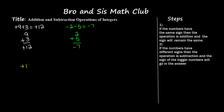Now let's do another problem: positive 11 and negative 7. Looking at step number two, if the numbers have different signs — and positive 11 and negative 7 do have different signs — then the operation is subtraction, and the sign of the bigger number will go in the answer. So I subtract: 11 minus 7 is 4. The bigger number is 11, which has a positive sign, so the answer is positive 4.